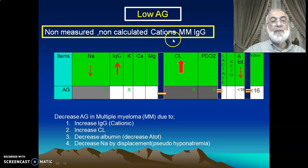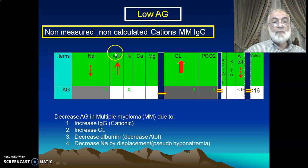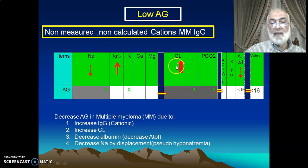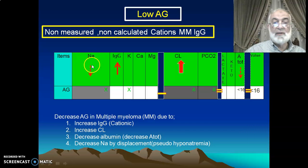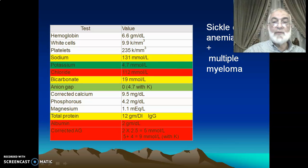Another cause is non-measured cationic immunoglobulin, such as immunoglobulin G in multiple myeloma. Immunoglobulin G is cationic. When this immunoglobulin is added to the cation side, and chloride is also retained as a measured anion, then when you calculate sodium minus chloride and bicarbonate, it will be low. This is a very important point for multiple myeloma. In multiple myeloma, sodium is also decreased due to displacement causing pseudo-hyponatremia, and there is hypoalbuminemia.